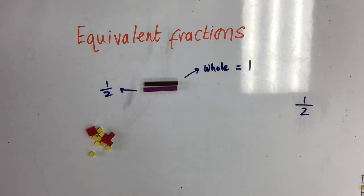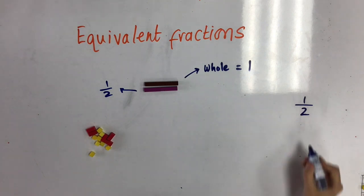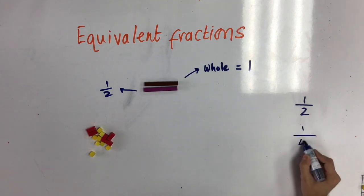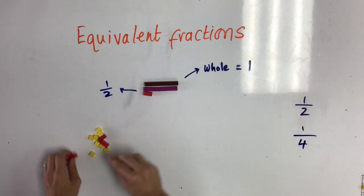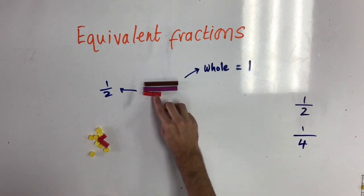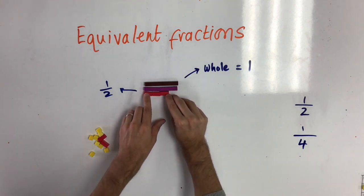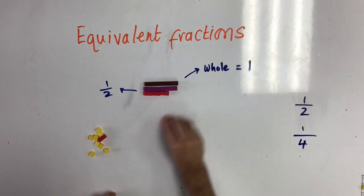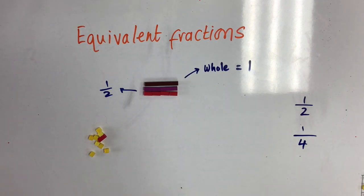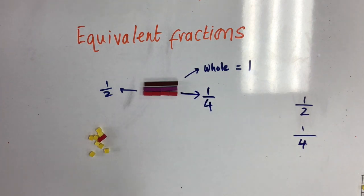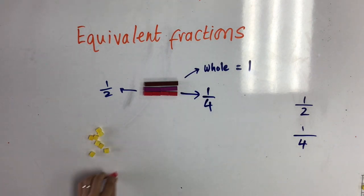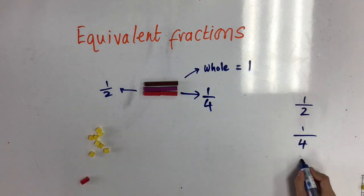I'm now going to show quarters of the brown rod by splitting it into four equal parts. The red ones help me to do this. And I'm going to show you eighths by splitting the brown rod into eight equal parts.